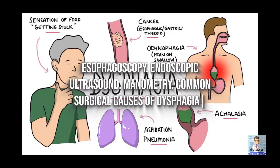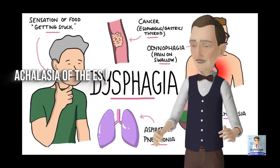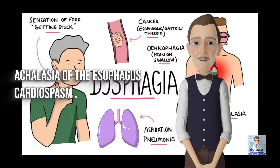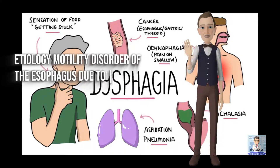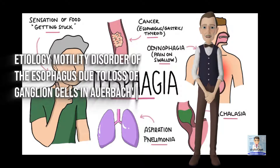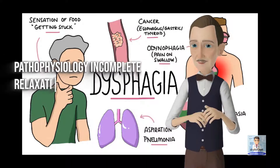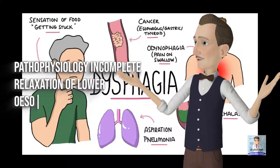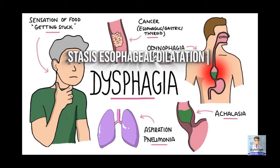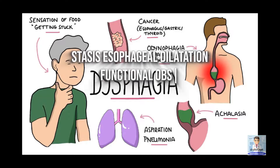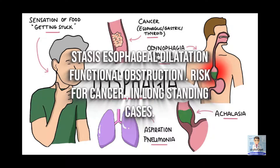Common surgical causes of dysphagia: Achalasia of the esophagus (cardiospasm). Etiology: a motility disorder of the esophagus due to loss of ganglion cells in Auerbach's plexus. Pathophysiology: incomplete relaxation of the lower esophageal sphincter leads to stasis, esophageal dilatation, and functional obstruction, with a risk for cancer in long-standing cases.